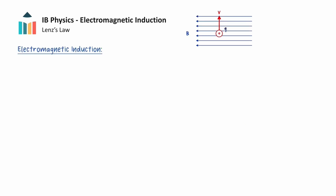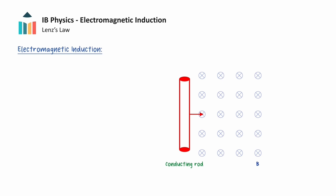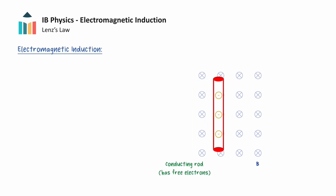Recall that when an electric charge moves perpendicularly to a magnetic field, a force acts on the charge. This means that when a conductor moves perpendicular to a magnetic field, the charges within it will experience a force. Let's imagine that we have a conducting rod that will move to the right across a magnetic field that acts into the page. As the rod is conducting, it will have many free electrons, so these electrons will also move from left to right with the rod.